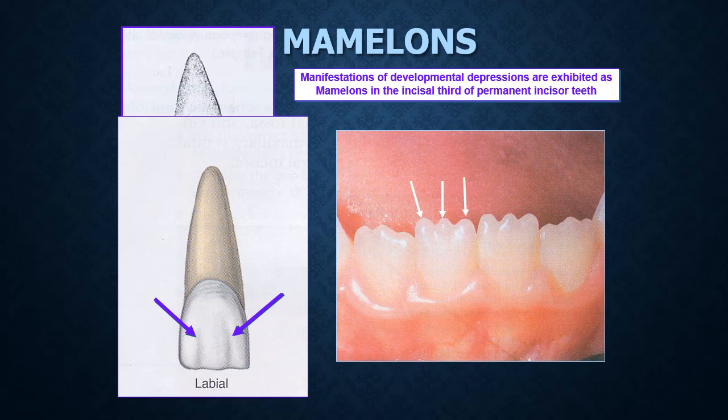Once the teeth erupt into the oral cavity and the child starts to masticate, mamelons are worn off due to normal wear and tear of enamel. But when they first erupt into the oral cavity, we can actually see these mamelons. Depending on the frequency and type of diet of the individual, they usually wear off over time.